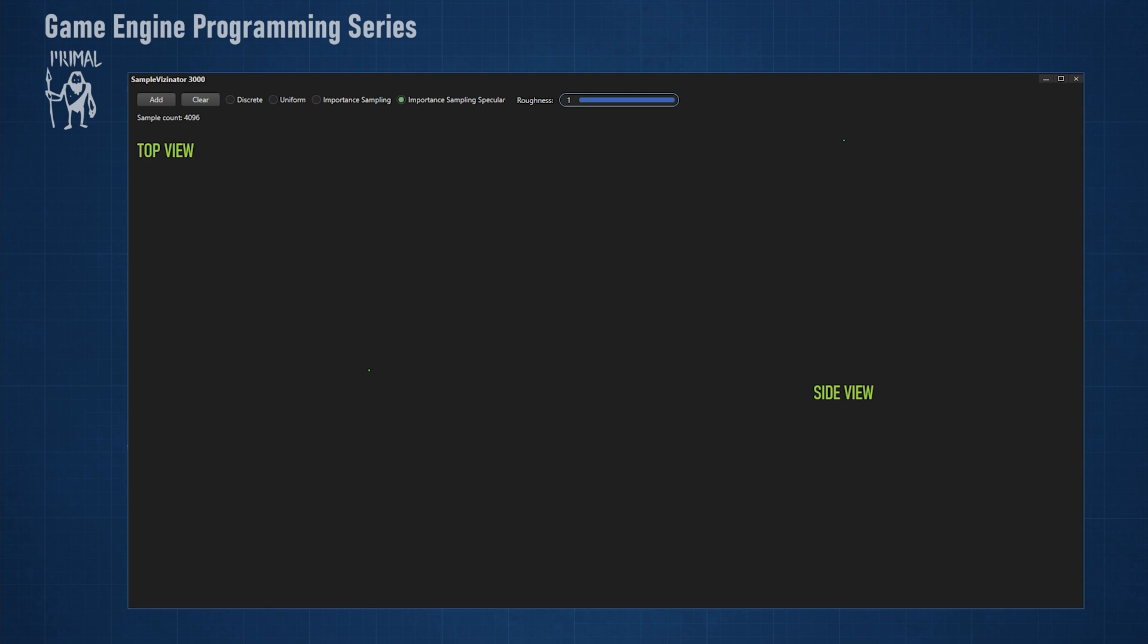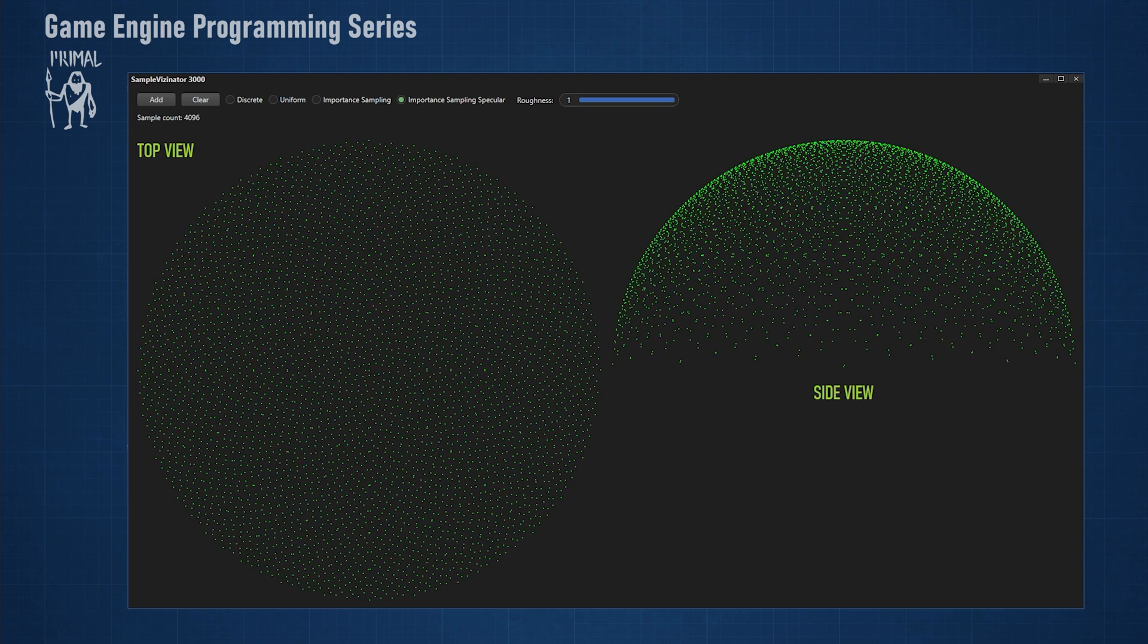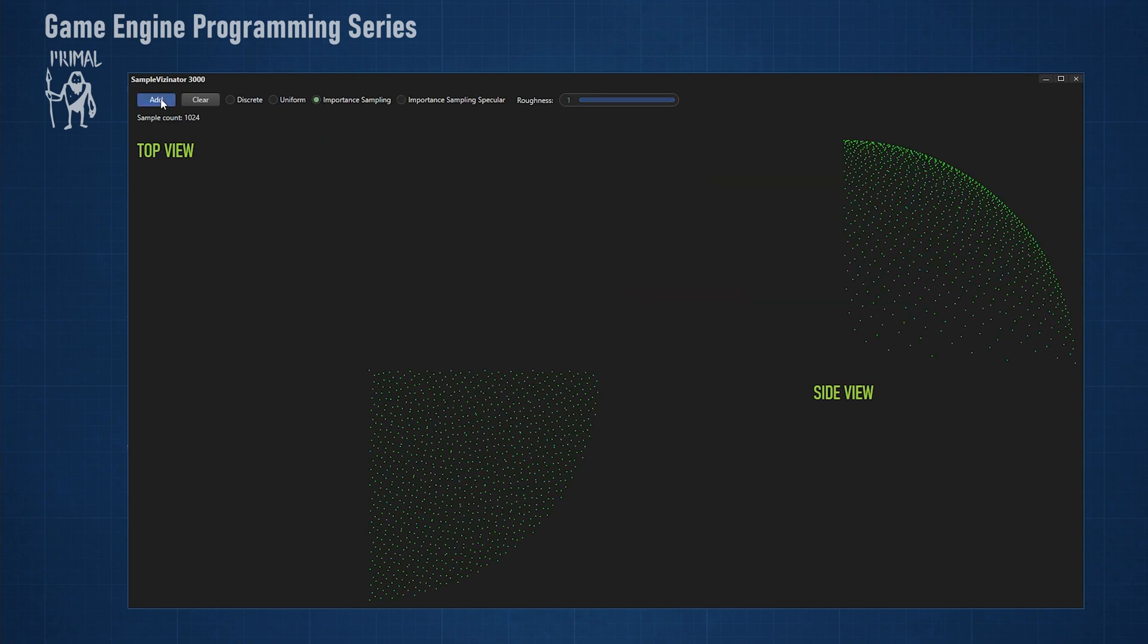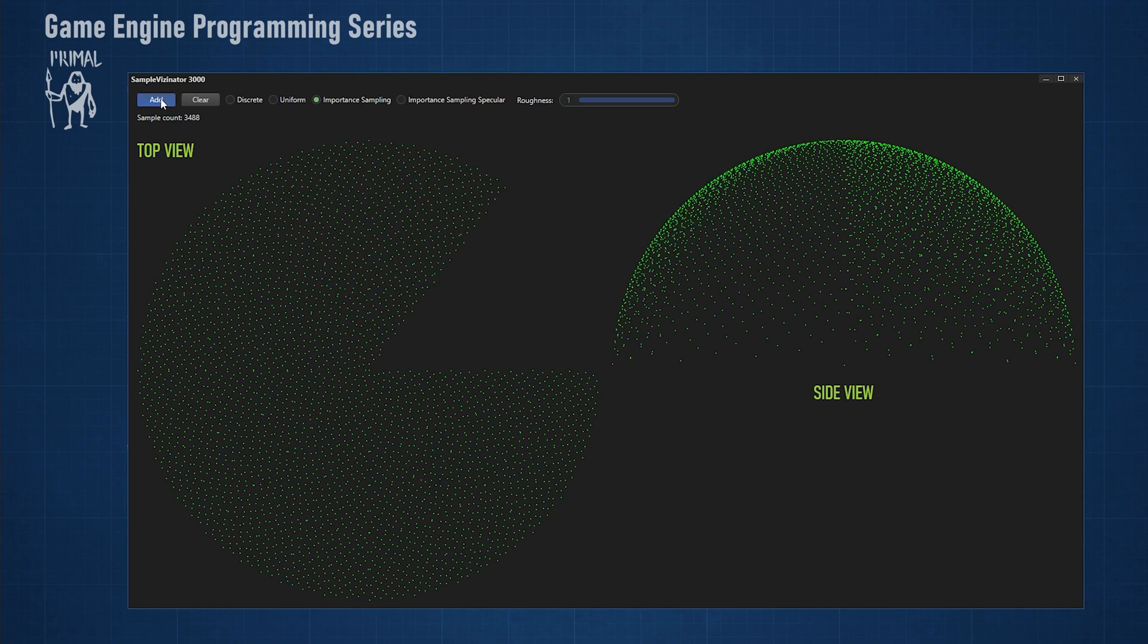In contrast, the samples will be much more scattered for fully rough surfaces. This is pretty much the same as the sampling pattern for the diffuse BRDF.